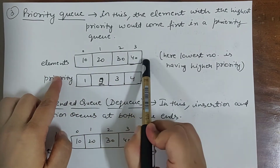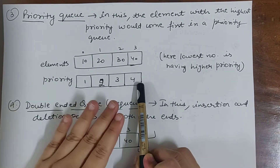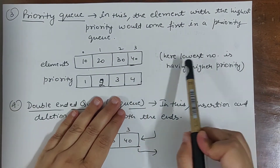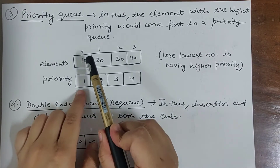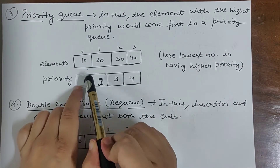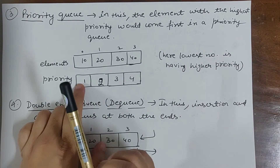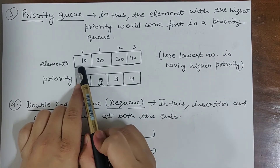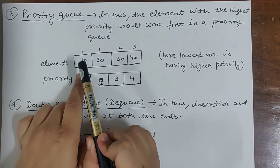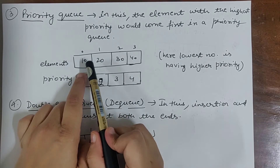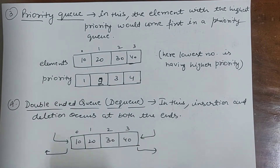These are the elements and these are the corresponding priorities. I consider the lowest number as having the highest priority. So if 1 is having the highest priority, it will stand in the front of the queue — it deletes first. Deletes first means this data is processed first.